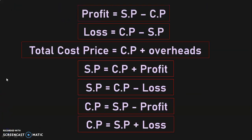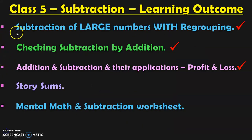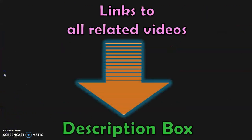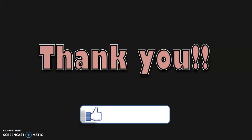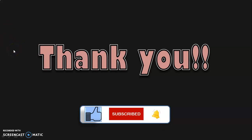Next, we are quickly going to see all the important formulas we learned. These are all the important formulas with respect to profit and loss. If required, dear viewers, please take a screenshot and keep it as it will help guide children to solve problems. These are all the learning outcomes in class 5 under the topic subtraction. Large number subtraction with regrouping and checking subtraction by addition are covered in separate videos. In this video, we saw profit and loss. In upcoming videos, we will see story sums, mental math and subtraction worksheets. Links to all related videos will be given in the description box. You may also click on the in-screen video for the class 5 subtraction playlist. Thank you for watching. Give a thumbs up if you like the video, subscribe to my channel, and click the bell button for notifications.